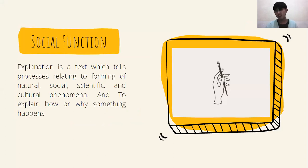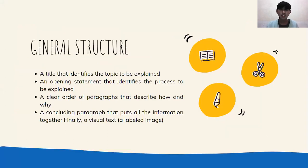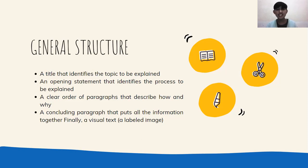Explanation text has a social function. The first is explaining text which tells about the process relating to the forming of natural, social, scientific, and cultural phenomena. And then, to explain how or why something happened. Now we move to general structure. Explanations have a general structure: first, a title that identifies the topic to be explained; an opening statement that identifies the process to be explained; a clear order of paragraphs that describe how and why; a concluding paragraph that puts all the information together; and finally, a visual text like labels or diagrams of nature.